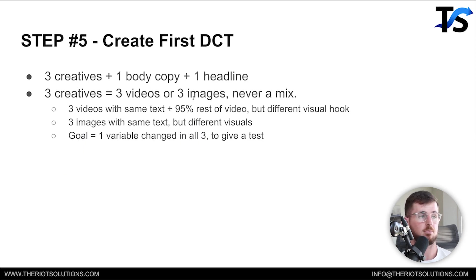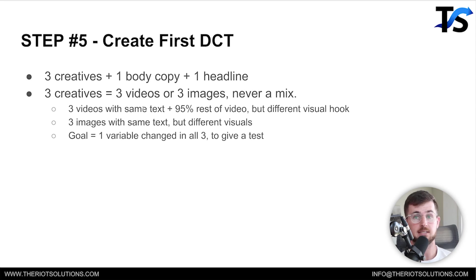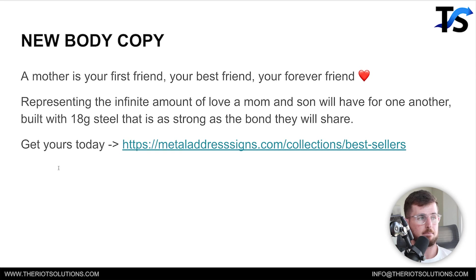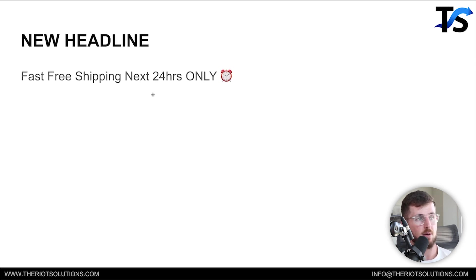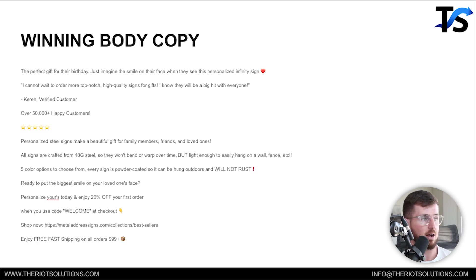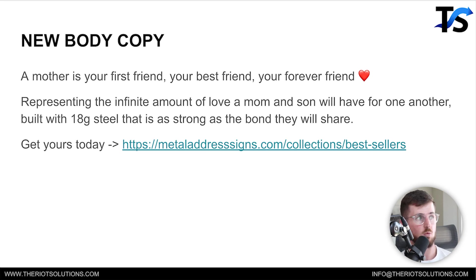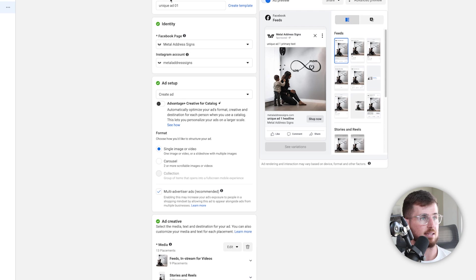We'll go create our first DCT. A DCT is basically three creatives, one body copy, and one headline. The three creatives — for me, three videos or three images, never mix the two — the reason is variable control. All three videos would be the same except the visual hook will be different, or all three images will be the same and the background will be different. We're building a DCT with three new creatives, a new body copy, a new headline, plus we're incorporating the existing winning body copy and existing winning headline: two copies, two headlines, three new creatives.